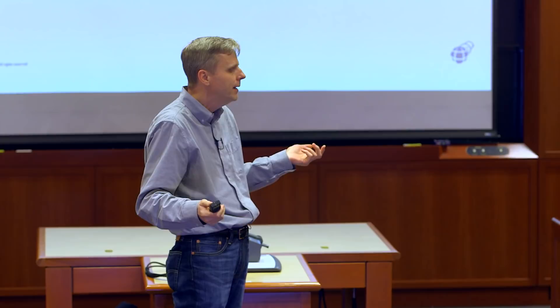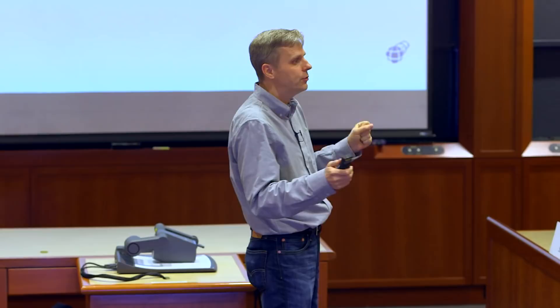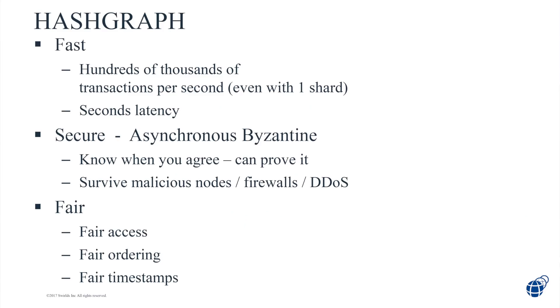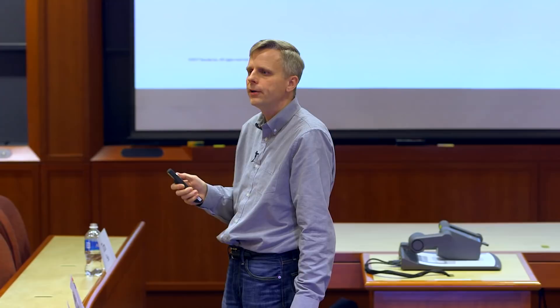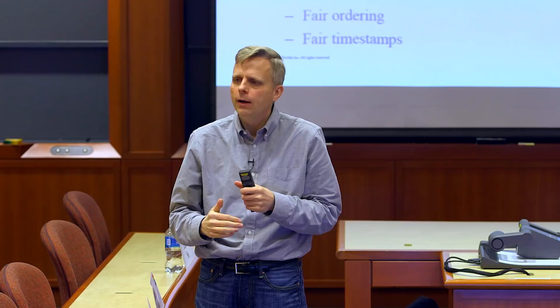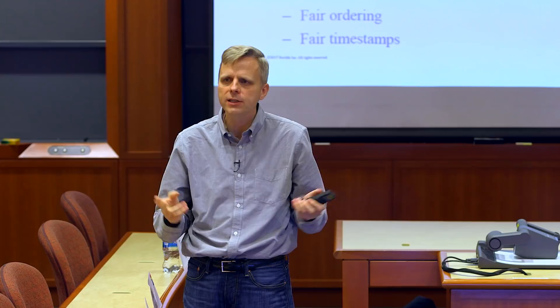Hashgraph is not slow, but it's still asynchronous Byzantine, and it also has a new property that ledgers usually don't talk about at all: fairness. In fact, we have three different kinds of fairness. We want our ledger putting transactions in order with good timestamps.